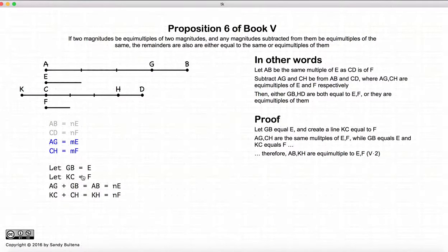So we have AG and CH are equal multiples of E and F, and you have GB and KC, which are equal multiples of E and F. So if you add them together, they will also be equal multiples of E and F.